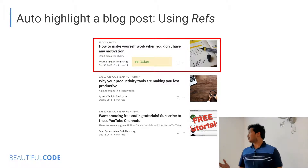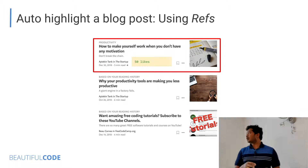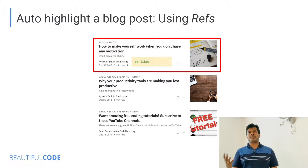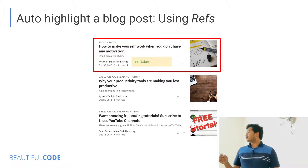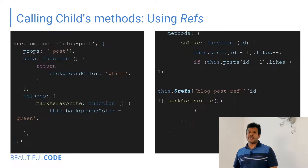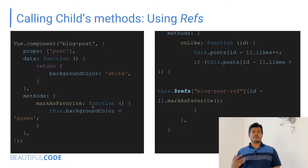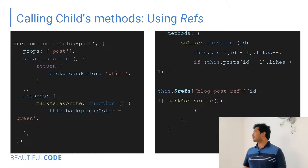There is another way for a parent to communicate with a child — refs. Refs are references to child components. When the view is rendered, refs are prepared and attached to the component, so you can reference any child component from the parent via a refs array. For example, if the number of likes reaches 50, the parent can use 'this.$refs.blogPostRefId' to reference the first child component and call a method like 'markAsFavorite' to make that blog post popular.